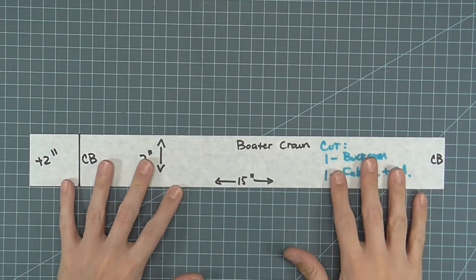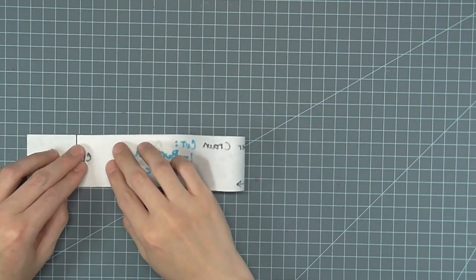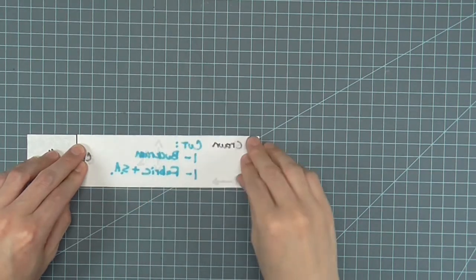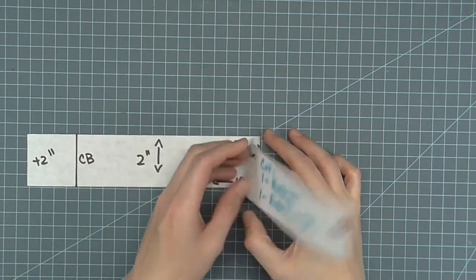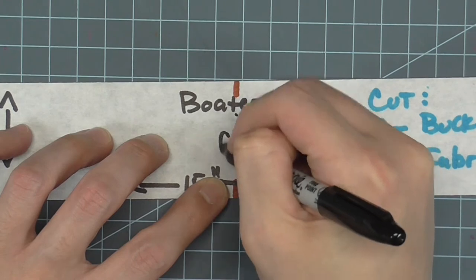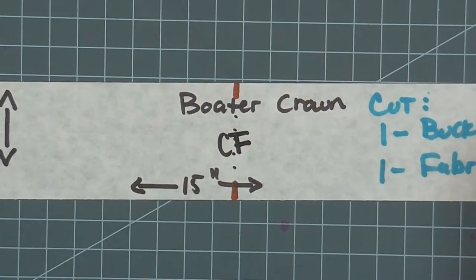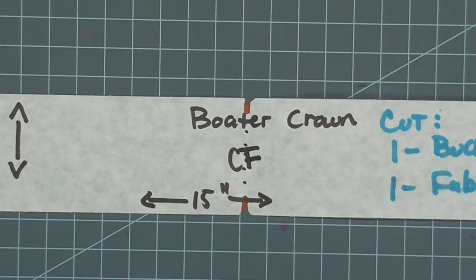Fold the crown in half to the center back lines and mark the center. This fold represents center front. Clip or notch the notches.